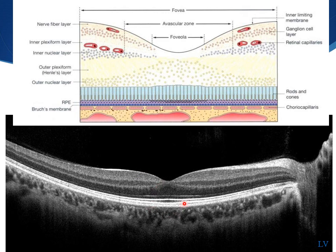Then you want to look at the four distinct hyperreflective lines. Starting from the inner part of the retina, you have the external limiting membrane, the inner-outer segment junction line, the COS line, and finally the retinal pigment epithelium. Bruch's membrane is located underneath the RPE, but unless the RPE is elevated secondary to serous pigment epithelial detachments, it's hard to visualize Bruch's membrane.